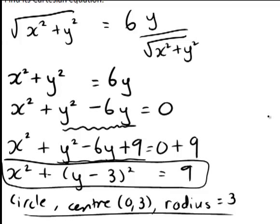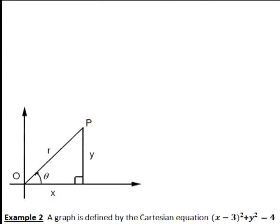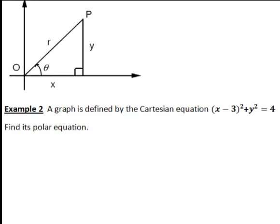That was an example of converting from polar equation into a Cartesian one. Let's now have a look at an example where we work in the other direction, where we start with the Cartesian equation and convert it to a polar equation. Here we want to rewrite this in terms of r and theta.